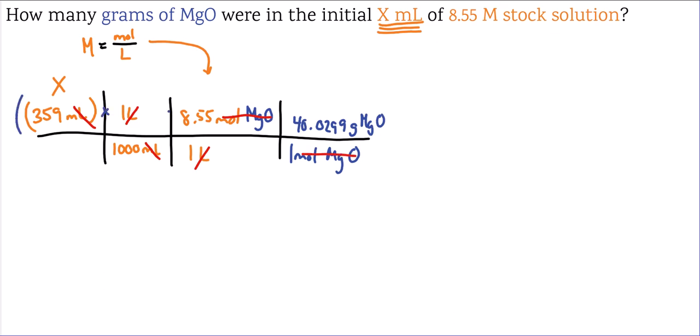Once I'm into moles of the solute, I can use the molar mass of the solute to figure out how many grams there are in this particular solution. Multiplying across the top and dividing by the product of the bottom, I get 122.89 grams.